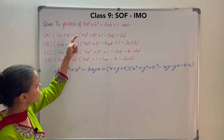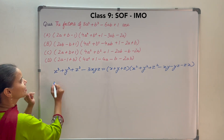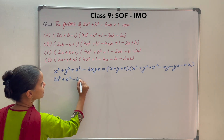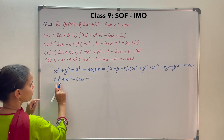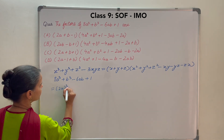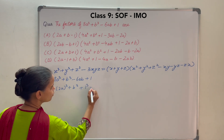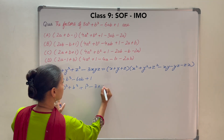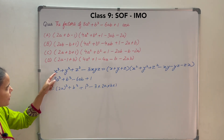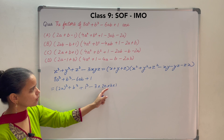Let us write down this expression. You can clearly see it is similar to this identity. So I will copy the expression: 8a cube plus b cube minus 6ab plus 1. I can write this as 2a whole cube plus b cube plus 1 cube minus 3 into 2a into b into 1. So here x is 2a, y is b, and z is 1. This is minus 3xyz.